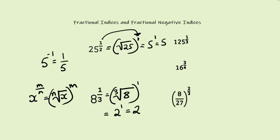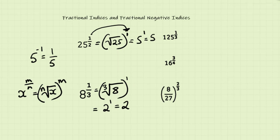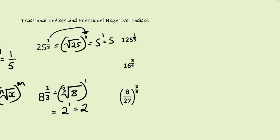Now let's look at 125 to the power of one third — it works the same way as 8 to the power of one third. Have a go at this question; pause the video and I'll reveal the answer in a few minutes. The answer is: cube root of 125 to the power of 1, which gives us 5, and 5 to the power of 1 is just 5.